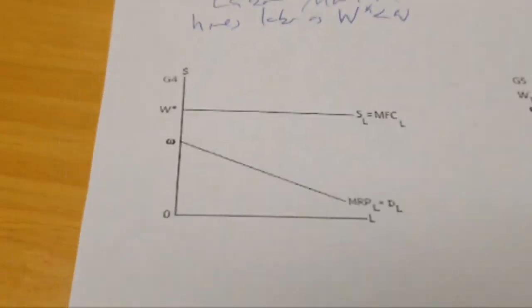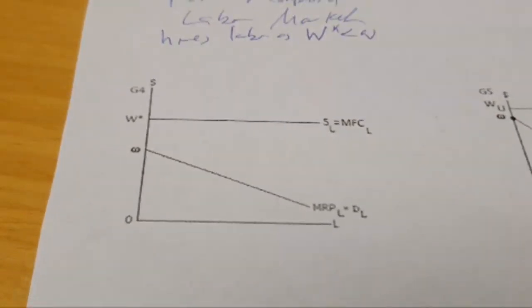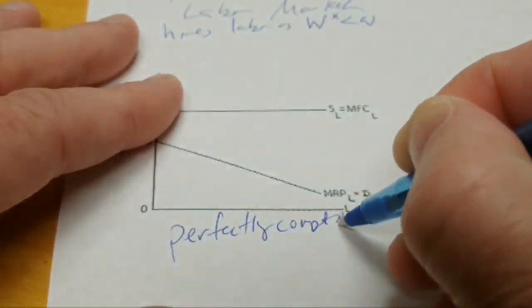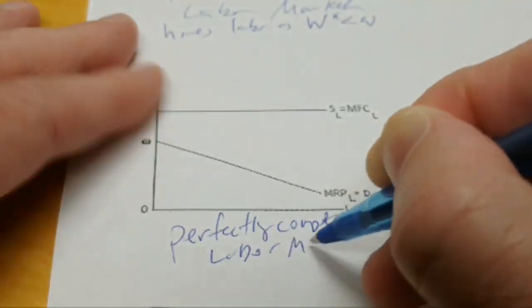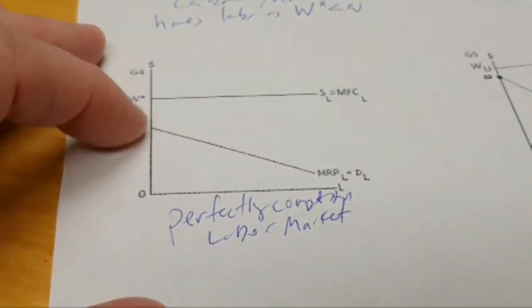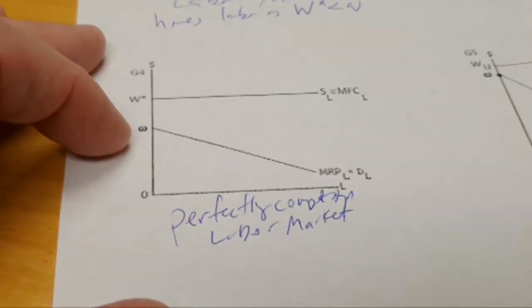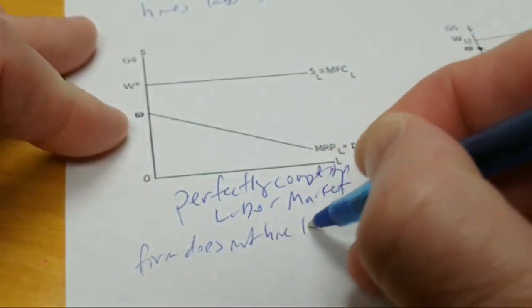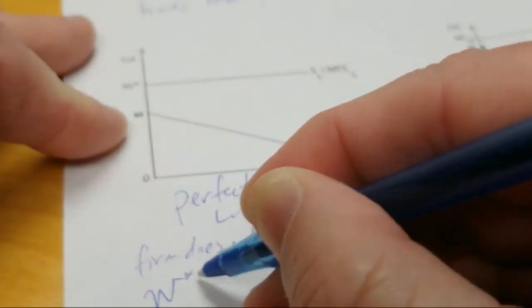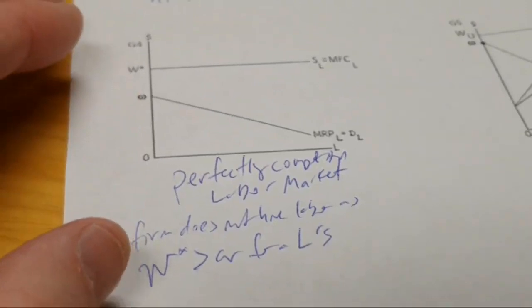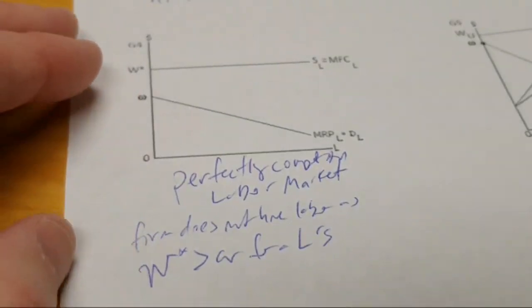Now let's zoom on down here to this next one, G4. Please notice this is also a perfectly competitive labor market - remember all words mandatory. But in this case here, you notice that W star is above omega for all values of L. And so labor is too expensive. Notice MRP never equals MFC where we have a positive labor value. So here, everybody's terminated, which means we will not have any labor hired.